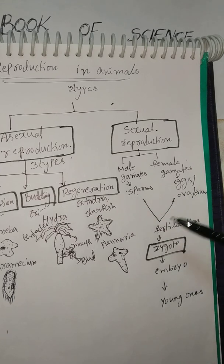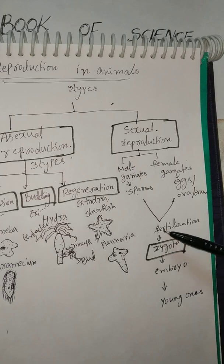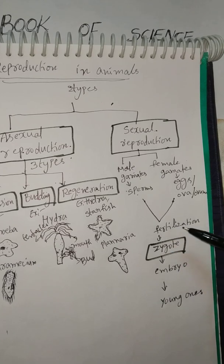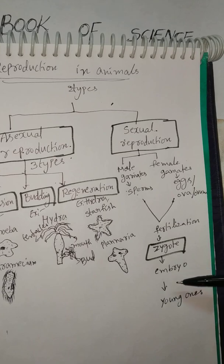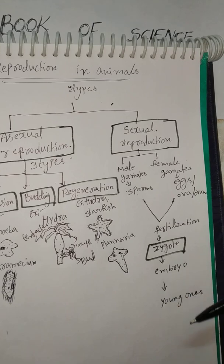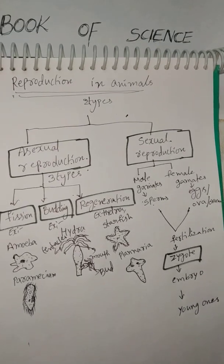Sperms and eggs fuse in a process called fertilization. After fertilization, a zygote is formed; the zygote develops into an embryo, and after the embryo develops it gives birth to young ones. This is Reproduction in Animals. Thank you everyone — please subscribe to my channel.